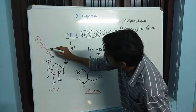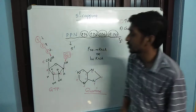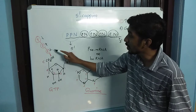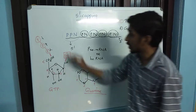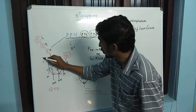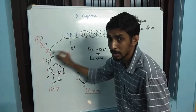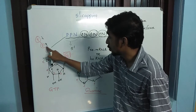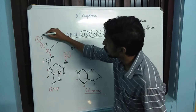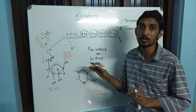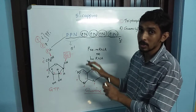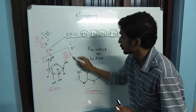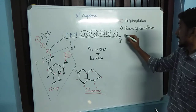During the addition of GTP by guanosine transferase, the diphosphate present at the five prime end attracts the alpha phosphate of the incoming GTP, creating a five prime to five prime diphosphate bond. During this process, a bond breaks, leaving two phosphates in the form of pyrophosphate (PPi). Now the five prime end of this premature mRNA is occupied by guanosine.